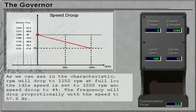As we can see in the characteristic, the RPMs will drop to 1152 RPMs at full load if the idle speed is set to 1200 RPMs and the speed droop is 4%. The frequency will drop proportionally with the speed to 57.6 Hz.